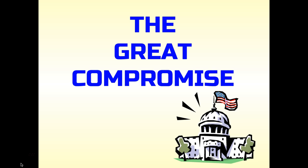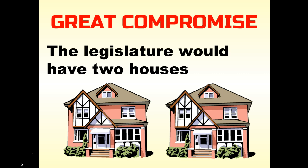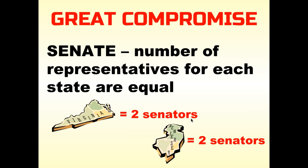The Great Compromise — also called the Connecticut Compromise — takes the best of both plans. It breaks the legislature into two houses. One house is the Senate, where every state has exactly the same number of representatives: two senators, regardless of population. So Virginia with a large population and New Jersey with a smaller population both get two senators. This mirrors the equality of the New Jersey Plan.